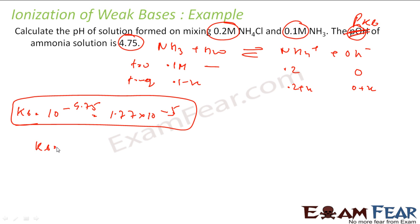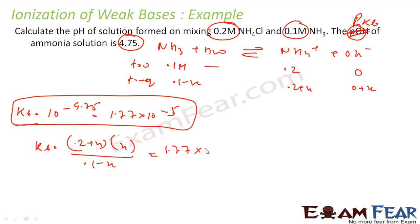So KB = [NH₄⁺][OH⁻] / [NH₃] = (0.2 + x)(x) / (0.1 − x) = 1.77 × 10⁻⁵. Solving this, x = 0.88 × 10⁻⁵.